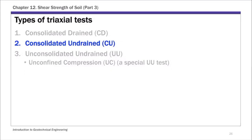For today's lecture, the topic is this second type of triaxial test, called the Consolidated Undrained Triaxial Test, or CU triaxial test. Among the three types, this is perhaps the most commonly used triaxial test. One of the reasons it is so widely used is that you can obtain both the drained and undrained, or total and effective strength parameters — both C, phi, and C prime and phi prime — from this Consolidated Undrained Triaxial Test.